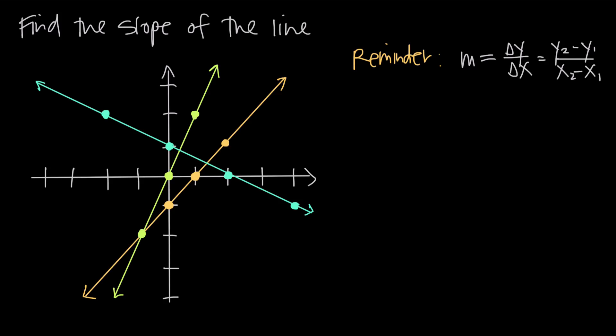In this video, we're talking about the slope of a line. The slope is basically how fast y is changing compared to how fast x is changing — how fast do I move along the y-axis compared to how fast do I move along the x-axis? Oftentimes you'll hear it called rise over run: rise meaning what's my change in y, and run meaning how fast do I go horizontally compared to vertically.